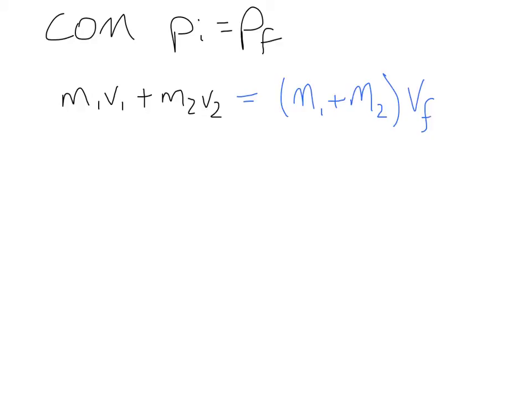So looking at this specific problem, the bullet, the initial momentum of the bullet, the mass was 0.0026 kilograms times the velocity, which was 380 meters per second, plus the momentum of the block. The block is initially at rest, so the velocity is 0. So that's the initial momentum, this is 0.